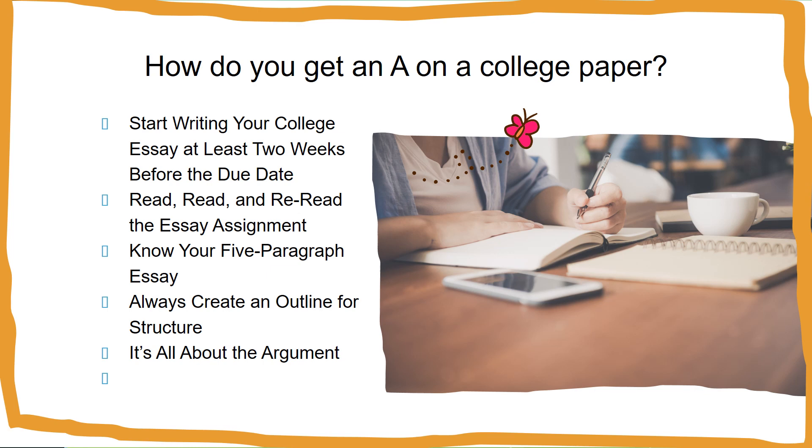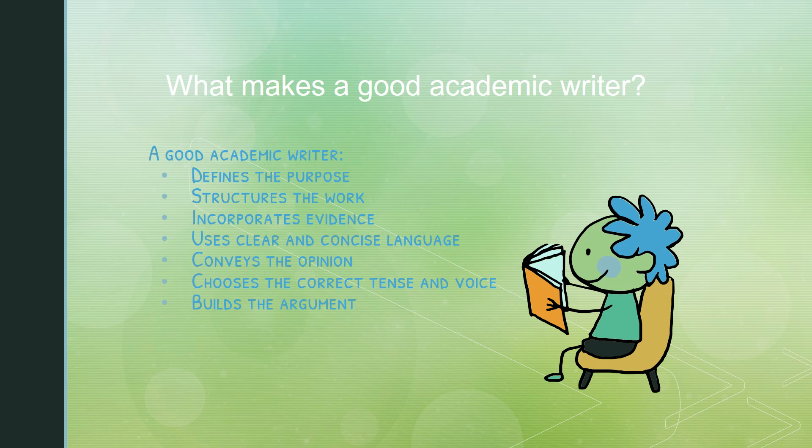A good academic writer defines the purpose, structures the work, incorporates evidence, uses clear and concise language, conveys the opinion, chooses the correct tense and voice, and builds the argument.